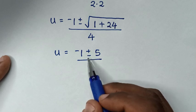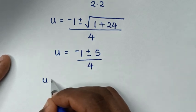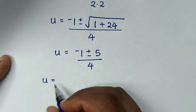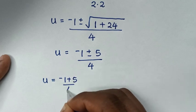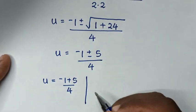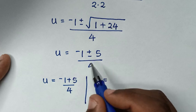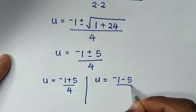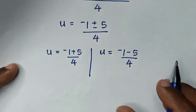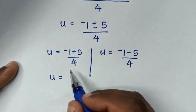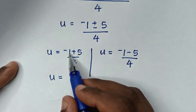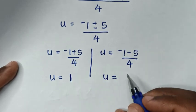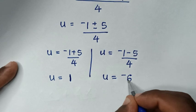We have two solutions because of the plus or minus. The first value of u equals negative 1 plus 5 over 4, and the second value of u equals negative 1 minus 5 over 4. So the first solution gives 4 divided by 4 equals 1, and the second gives negative 6 over 4.